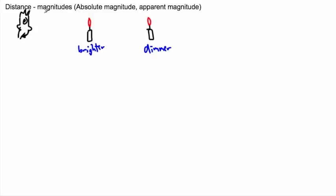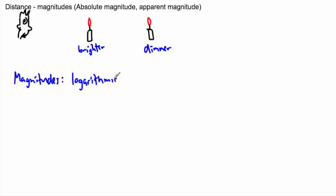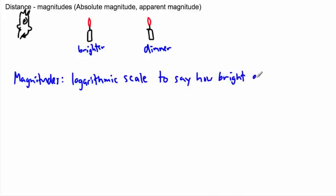This same concept is going to be used for magnitudes, except instead of luminosity and apparent brightness, we're going to use different terms. First of all, magnitudes use a logarithmic scale. That means it's not linear — things work with powers of 10 — and it's used to say how bright an object or a star is.